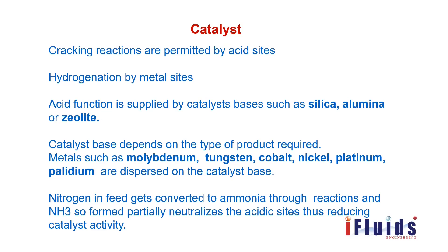In catalyst function: cracking reactions are promoted by acid sites, and hydrogenation by metal sites. The acid function is supplied by the catalyst base — such as silica, alumina, or zeolite — depending on the type of product required. Metals such as molybdenum, tungsten, cobalt, nickel, platinum, and palladium are dispersed on the catalyst base. Nitrogen in the feed gets converted to ammonia through reactions, and the ammonia formed partially neutralizes the acid sites, thus reducing catalyst activity. Therefore, nitrogen removal is one of the main factors affecting catalyst activity.